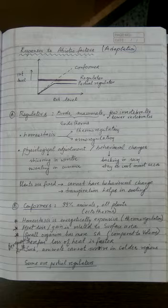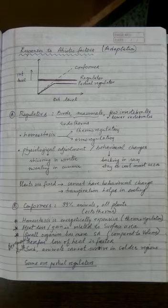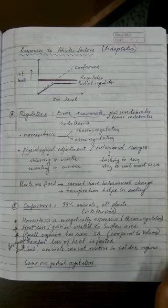Now there are some organisms which are partial regulator. That means they are not able to continue to regulate temperature for a long period of time. So after some time, they start acting like conformers.